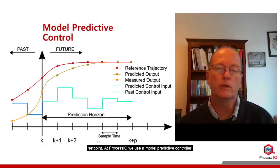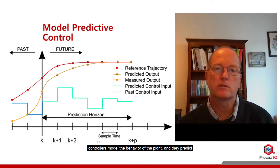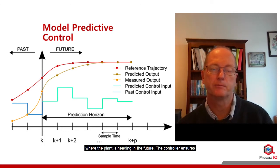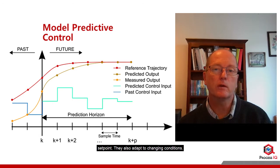At ProcessIQ we use a model predictive controller which has the residence time built into the model. These types of controllers model the behavior of the plant and they predict where the plant is heading in the future. The controller ensures that you get to set point a lot faster and they try to keep you at set point. They also adapt to changing conditions.